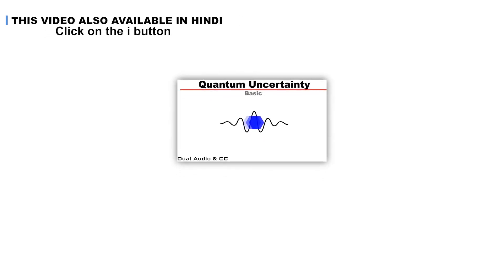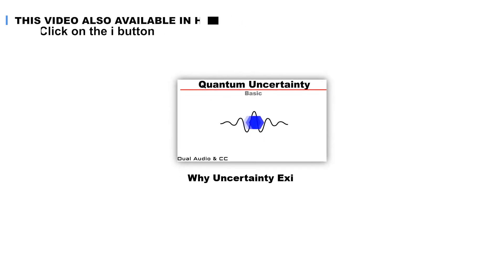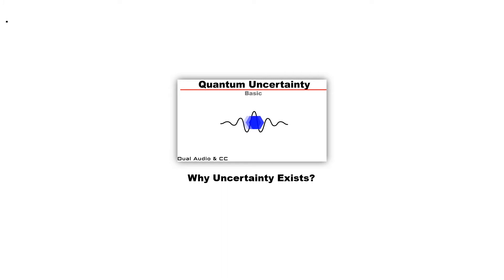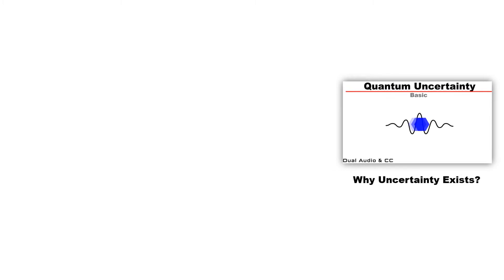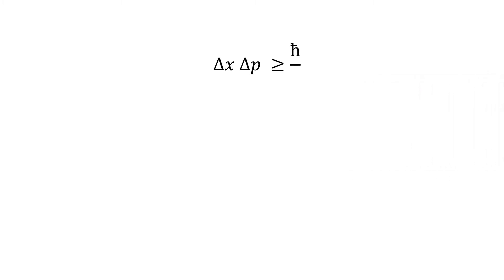In the previous video on quantum uncertainty, we learned why the exact position and exact speed of an object cannot be measured simultaneously in quantum physics. In quantum physics, there is always uncertainty in the simultaneous measurement of the position and momentum of an object. The uncertainty relation between them is given by this equation.